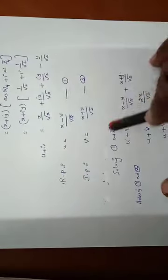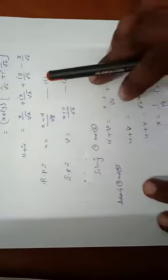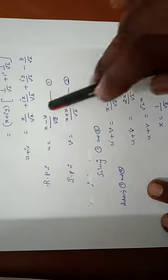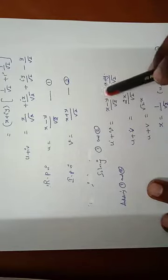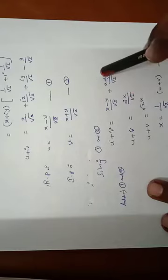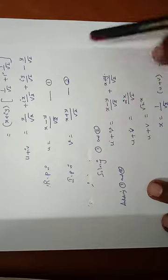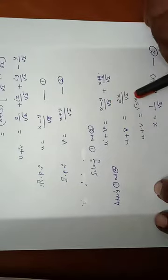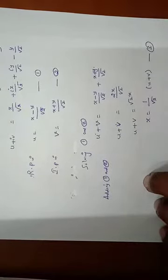Solving equations 1 and 2 by adding them: u + v = (x−y)/√2 + (x+y)/√2 = 2x/√2 = √2·x. Therefore x = (1/√2)(u + v), which is equation 3.